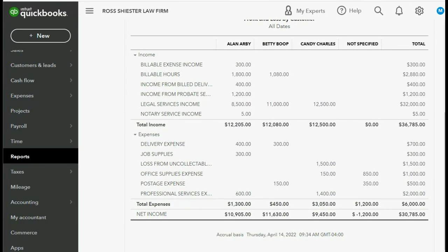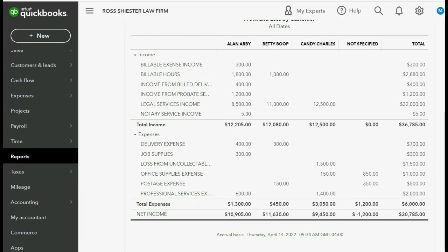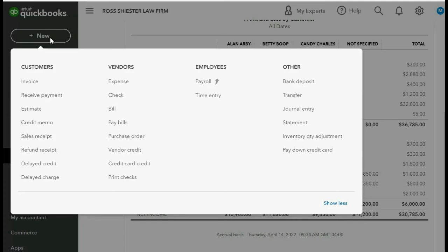Now we get to the interesting part. On July 28th we bill Candy for $3,000 in normal legal fees, and we include the July 26th accounting professional services that we're billing her for. We click New, Invoice, and we're billing Candy Charles — right away we can add the billable expense.